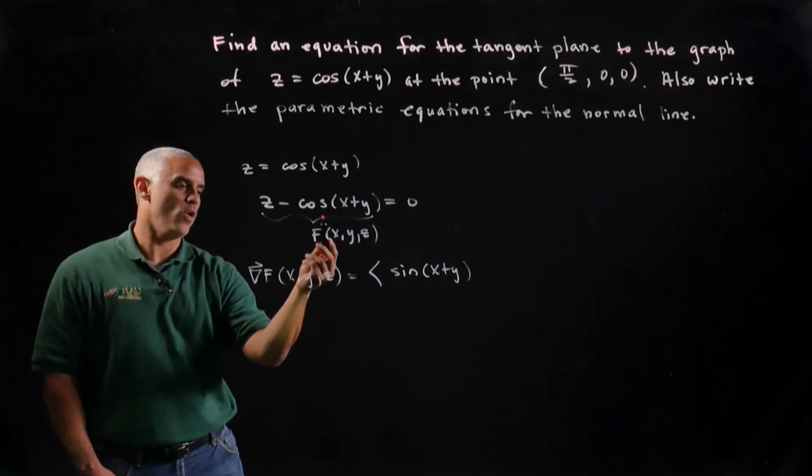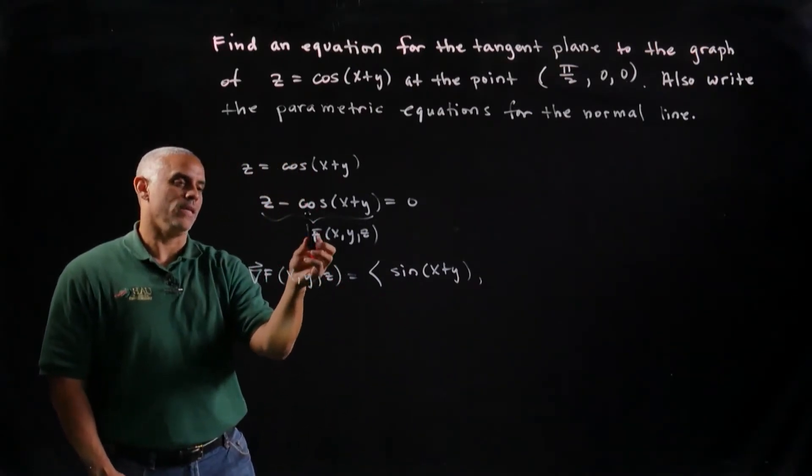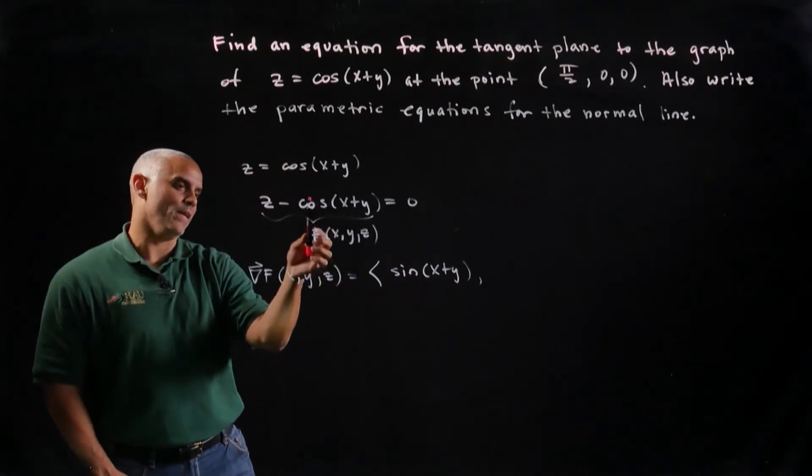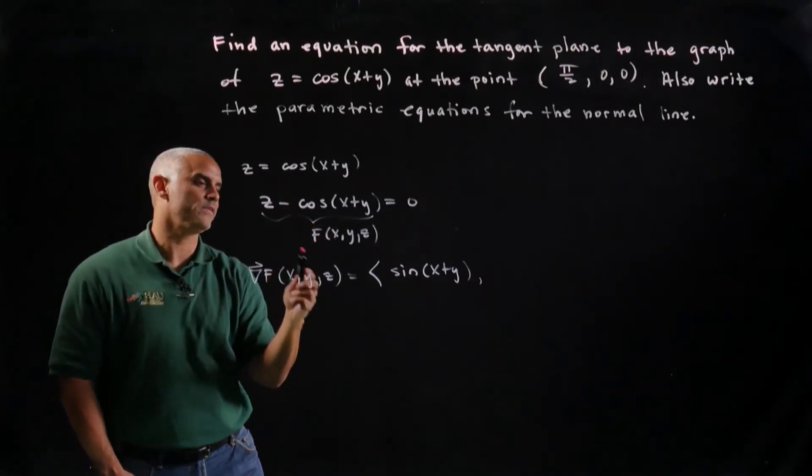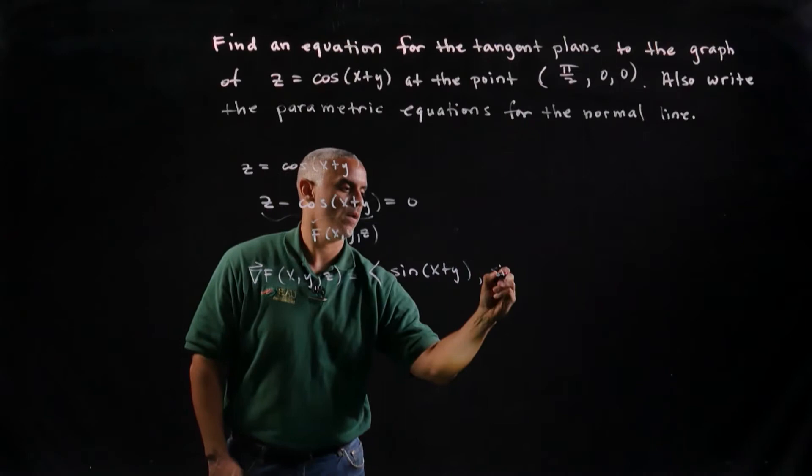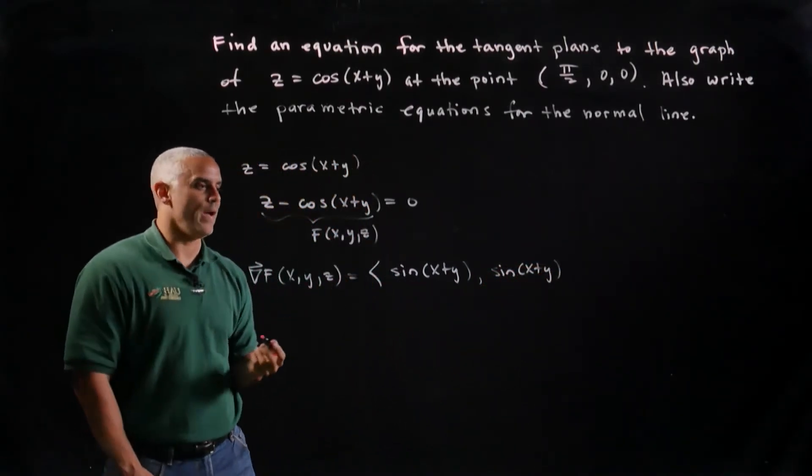Likewise, if I find the partial with respect to y, I take the derivative of the cosine again, I get a negative sine, and the negative of the negative will give me a positive sine x plus y, and the partial of y with respect to y again is just 1.